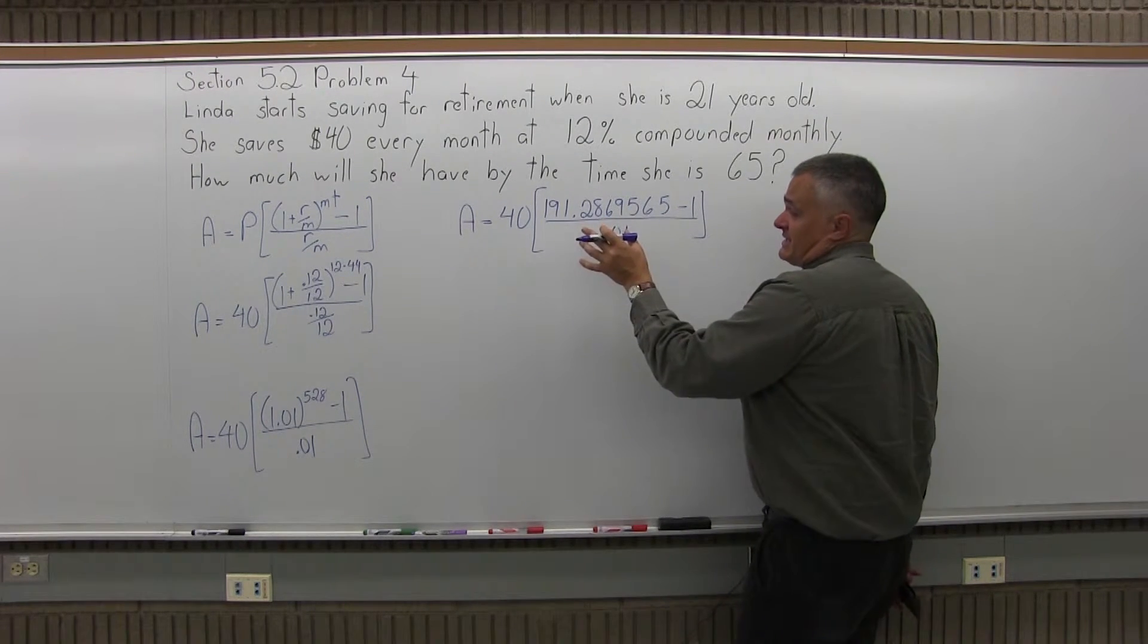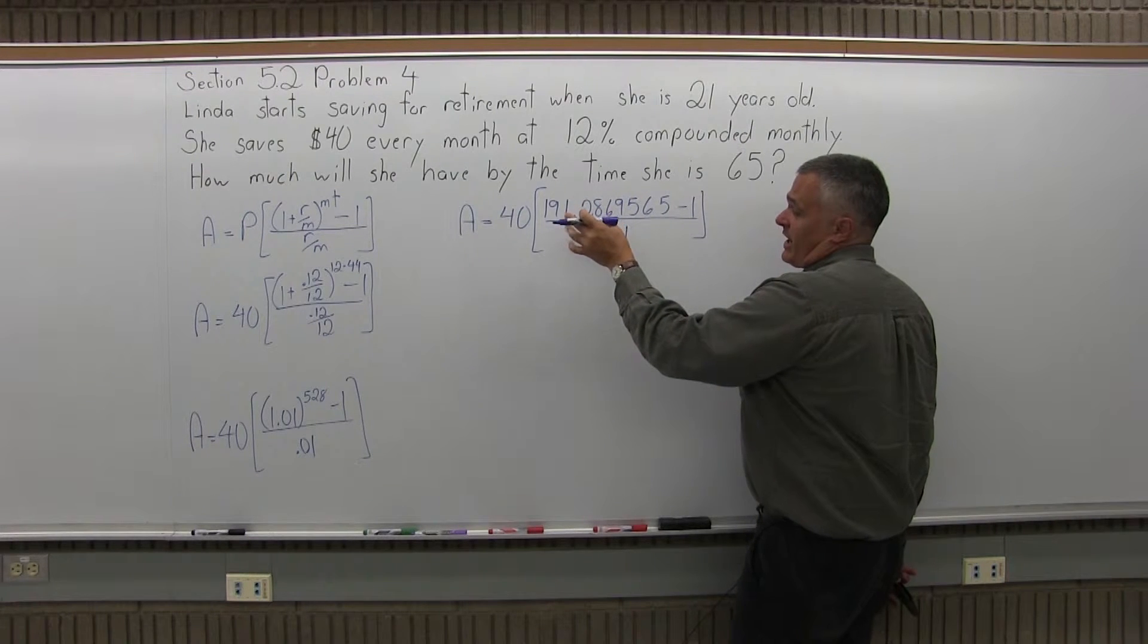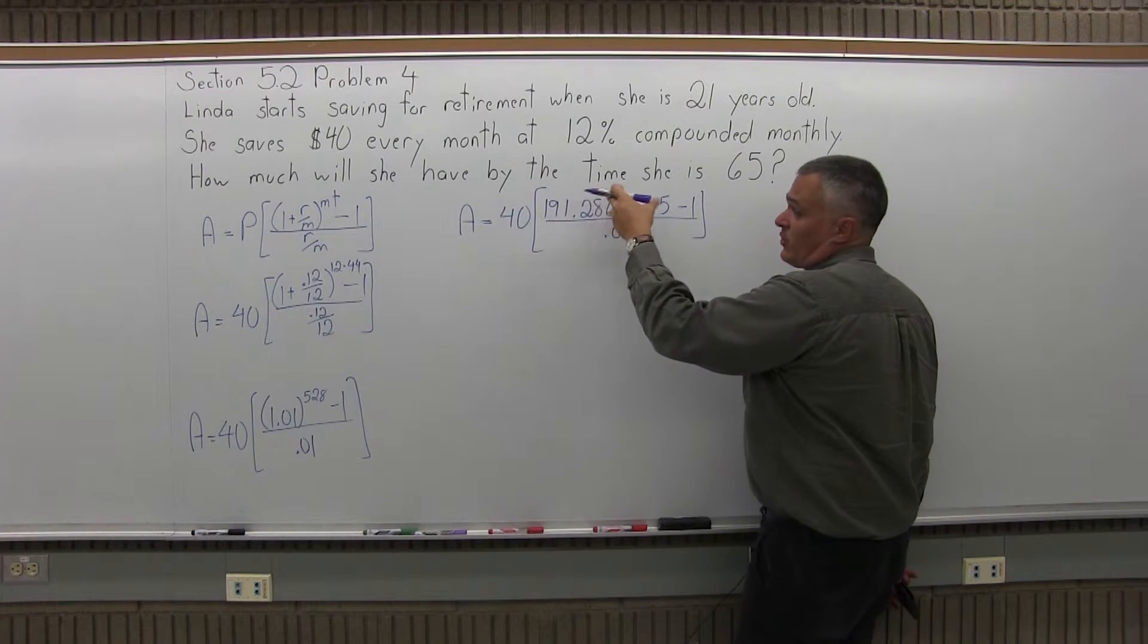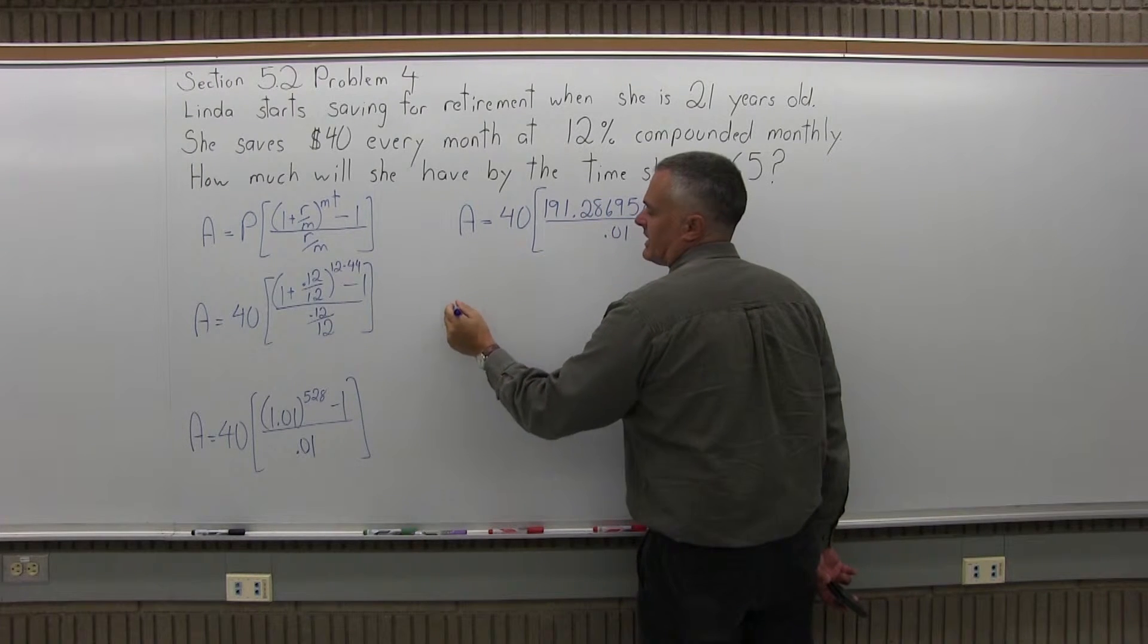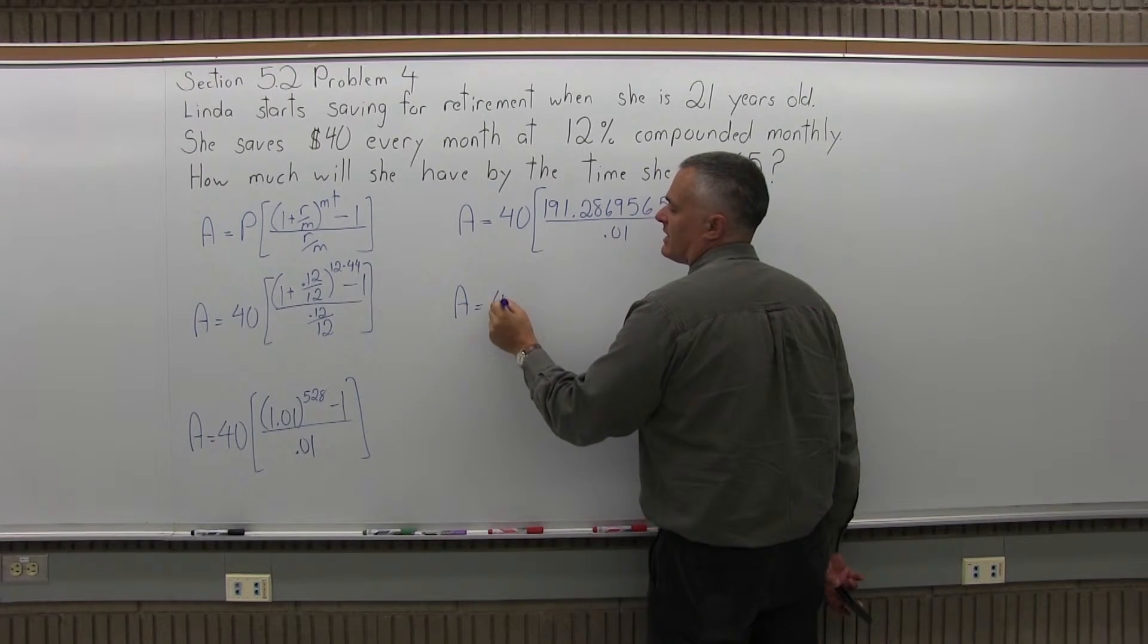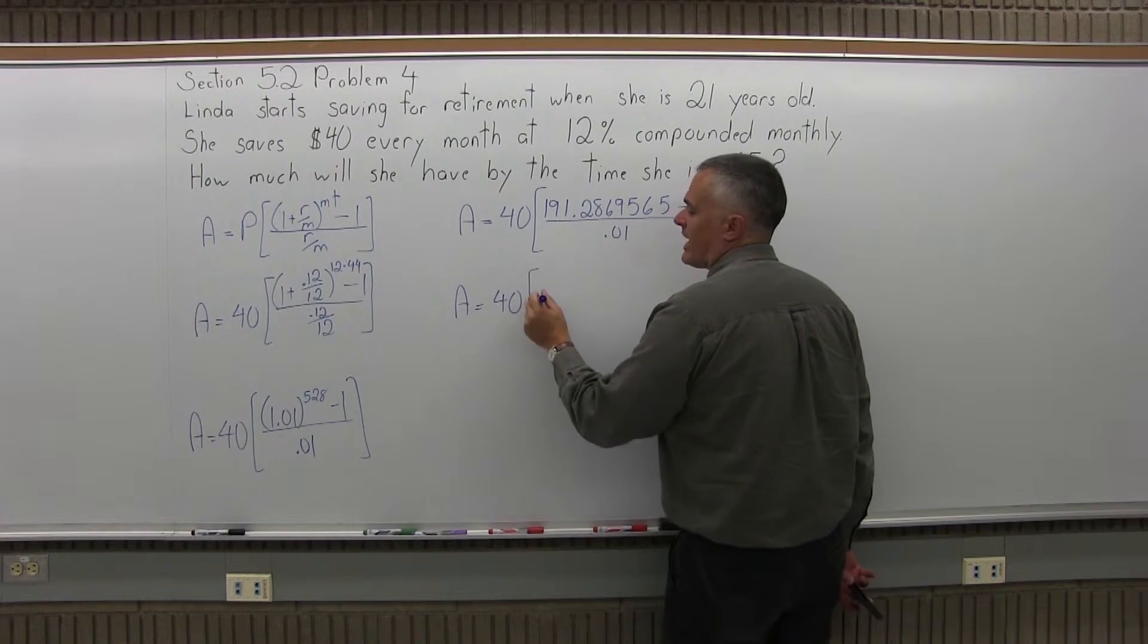So the minus 1 is easy. I'll finish off the top of my brackets. The 191 point something is going to be 190 point something.